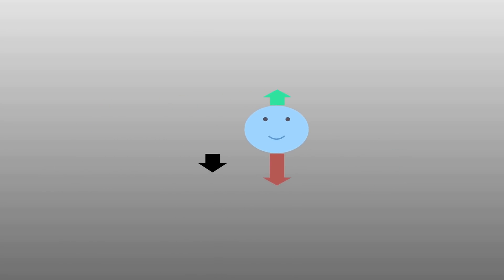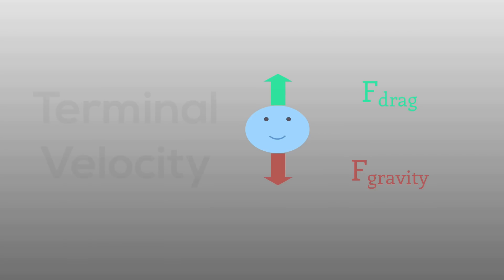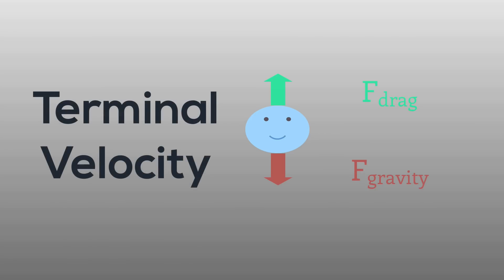But as you start to speed up, you'll eventually be going fast enough that the air is pushing you up just as hard as the earth is pulling you down. Now gravity doesn't win out — in fact, neither force does — and so you're free to fall to the ground at terminal velocity, without speeding up or slowing down.